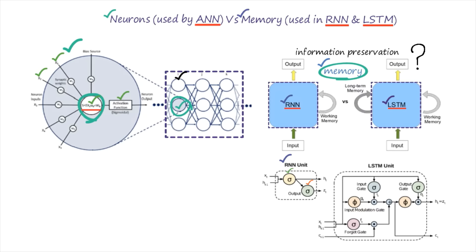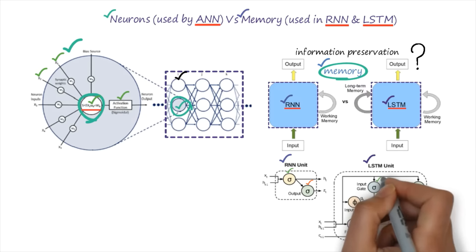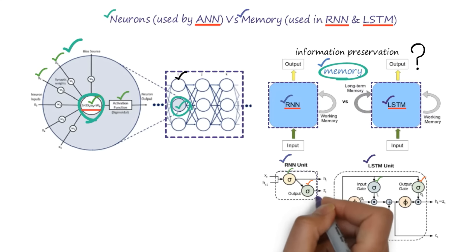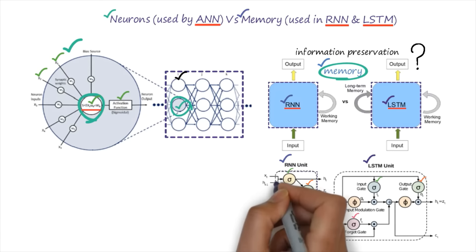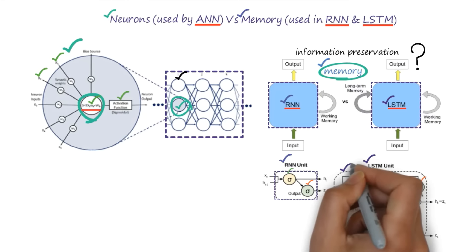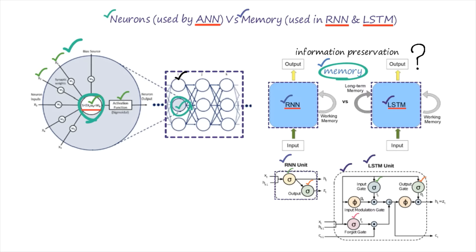Whereas in the LSTM memory cell, we have three gates: input gate, output gate, and forget gate. So whenever I draw one RNN memory cell it will have two gates, and whenever we have an LSTM memory cell it will have three gates. These are the basic differences.